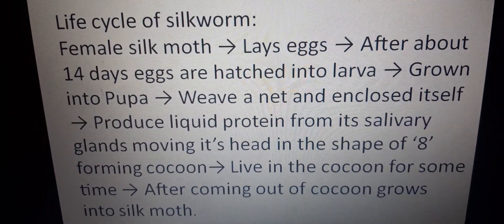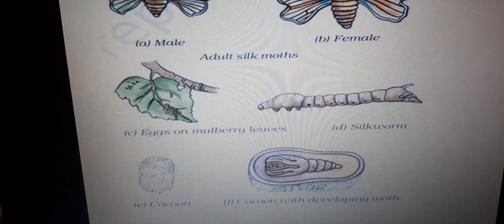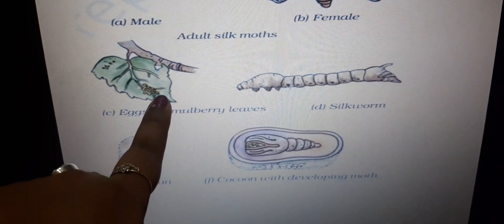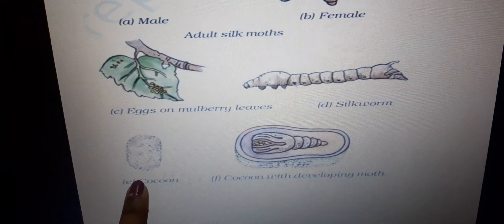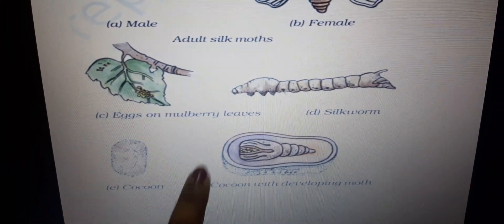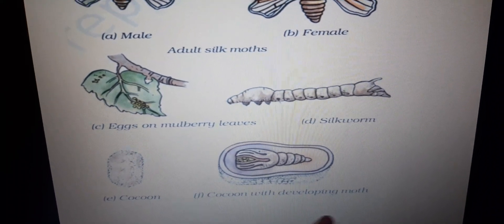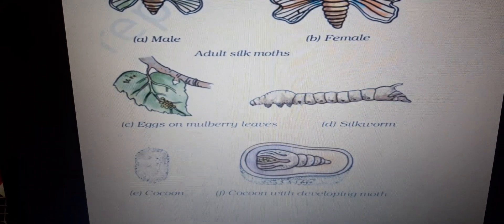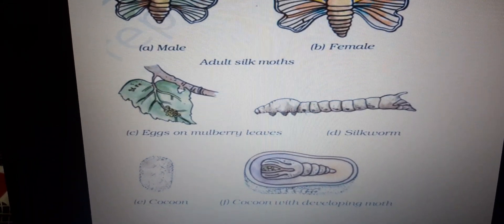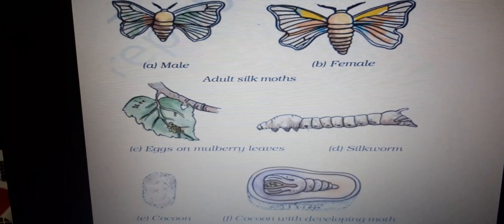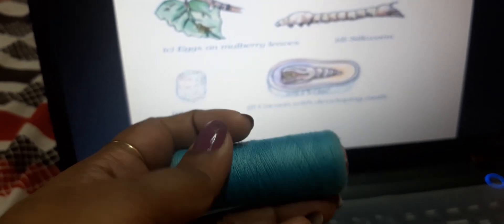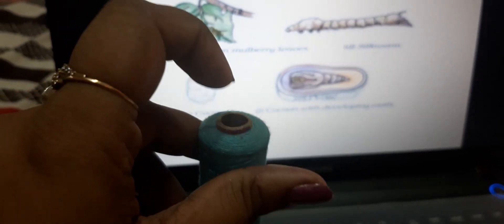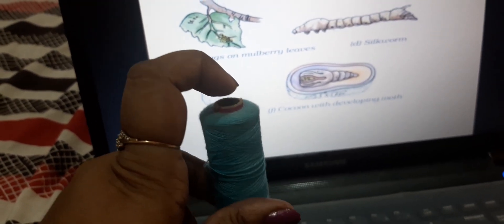So this is the life cycle of silk moth: first, the eggs are laid on the mulberry leaves; then the eggs hatch to form silkworm or caterpillar or larva; after that, they form a cocoon — this stage is also known as pupa. The cocoon is the outermost covering, protecting the silkworm inside. Finally, the silkworm develops inside and the cocoon breaks, and a beautiful silk moth comes out.